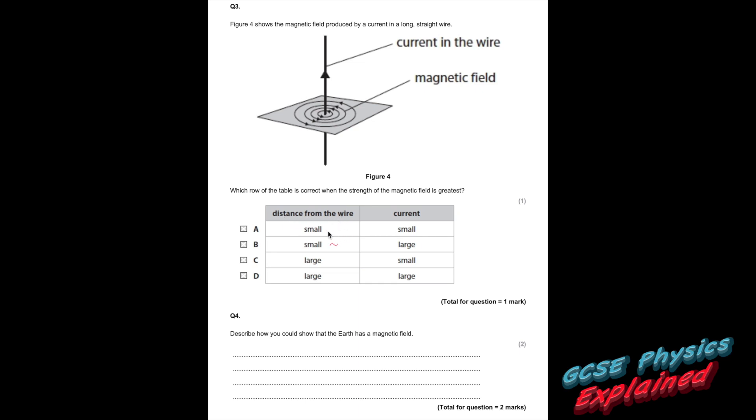So the distance from the wire wants to be small, so it's either A or B, and the current needs to be large. So it's B. You can tell how strong the magnetic field is by how close the lines are together. So you can see the lines here are close together, and over here the lines are not as close together.